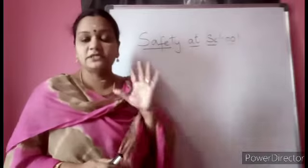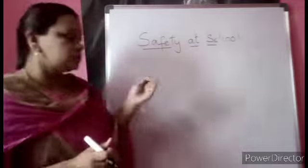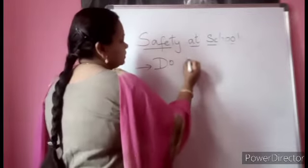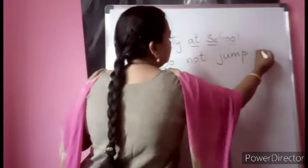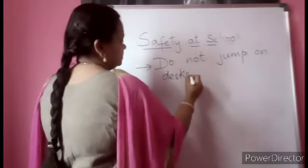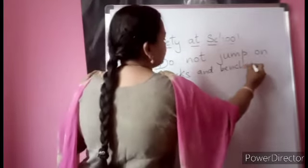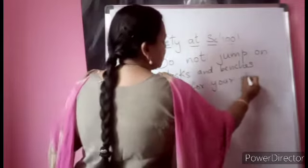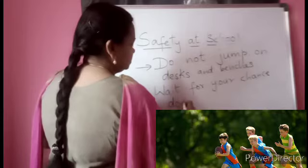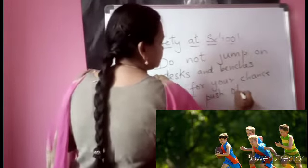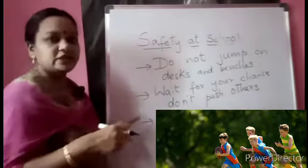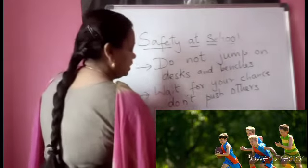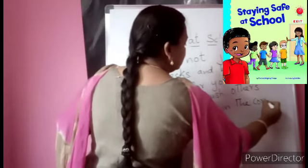So let us write what are the general rules. At least 5 important rules to be followed in school — let's write them. First: do not jump on desks and benches. Do not run inside the classroom. When you are playing, wait for your chance — in the slider, don't push others. Do not push others — this applies on the stairs too, when you are climbing up. Do not run in the corridor, as this may lead to an accident — you may get hurt and make others get hurt too.